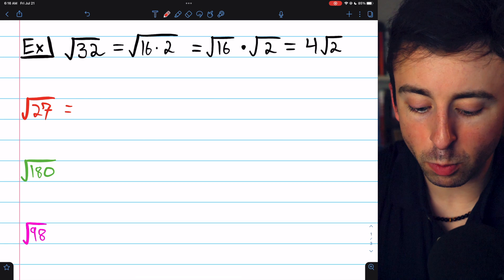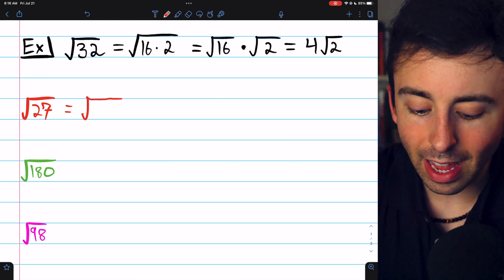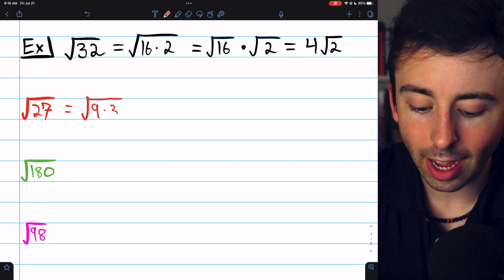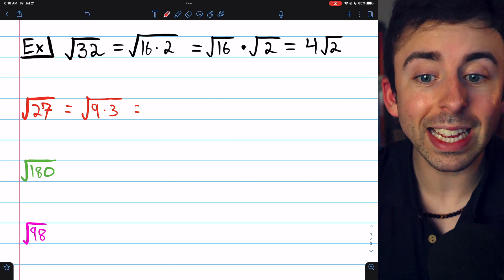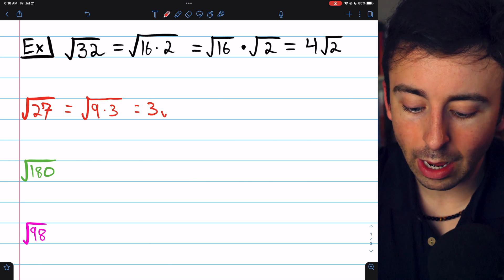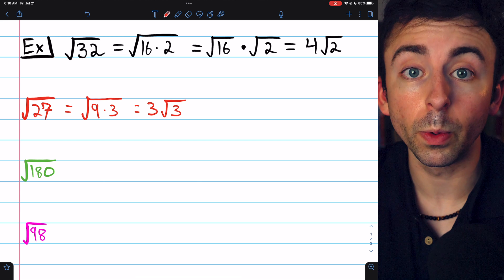Let's try it with the square root of 27. 27 is the same as 9 times 3. The square root of 9 is 3, so we can take that out of the square root, and what remains is 3 root 3.